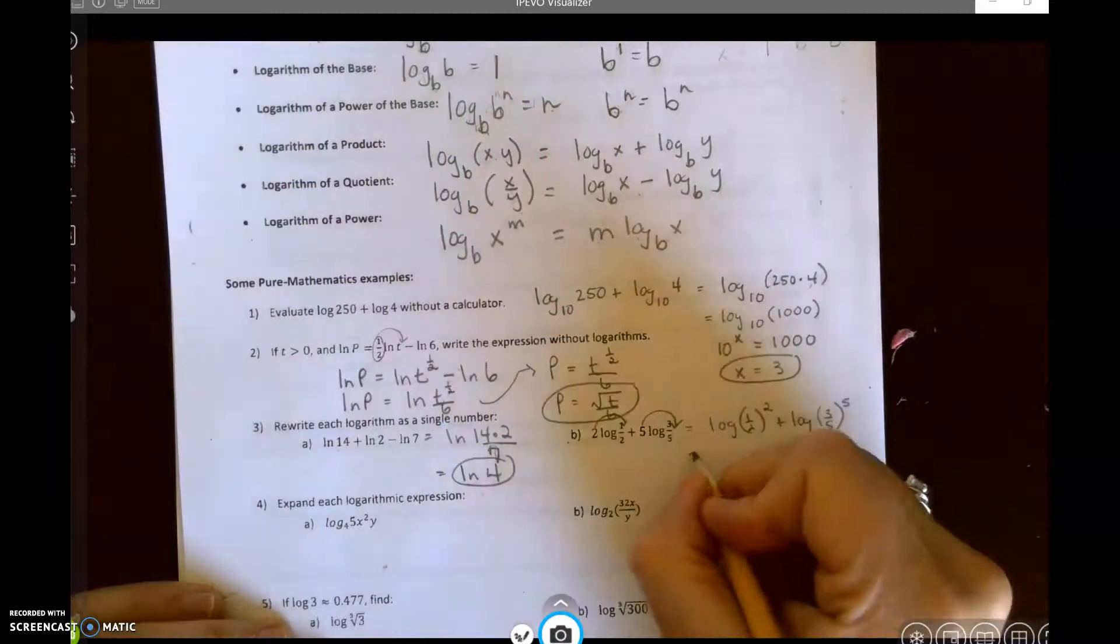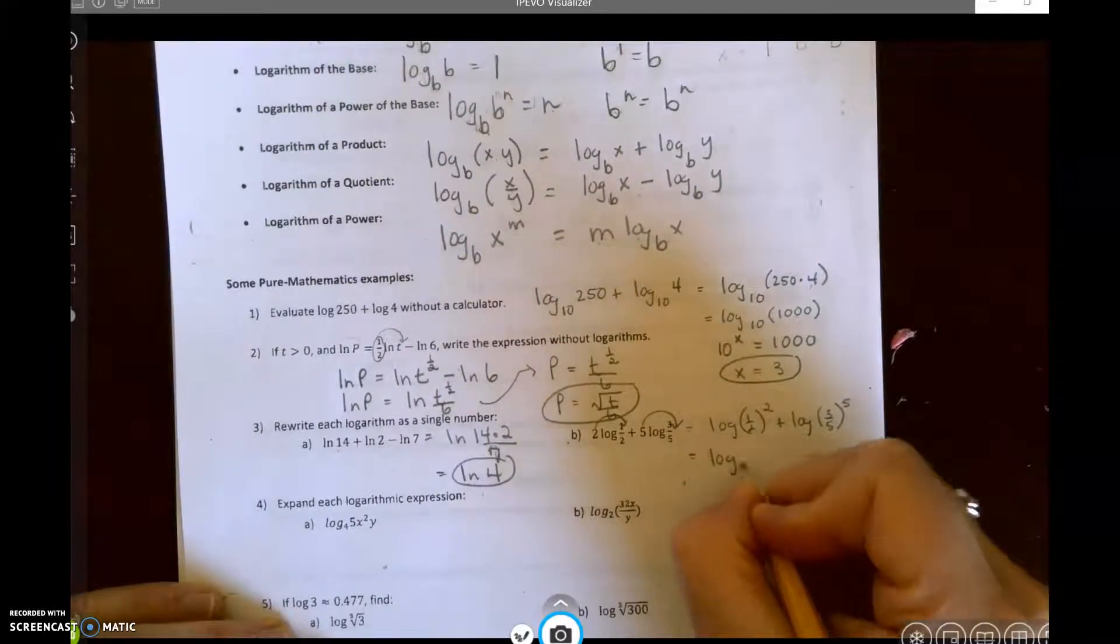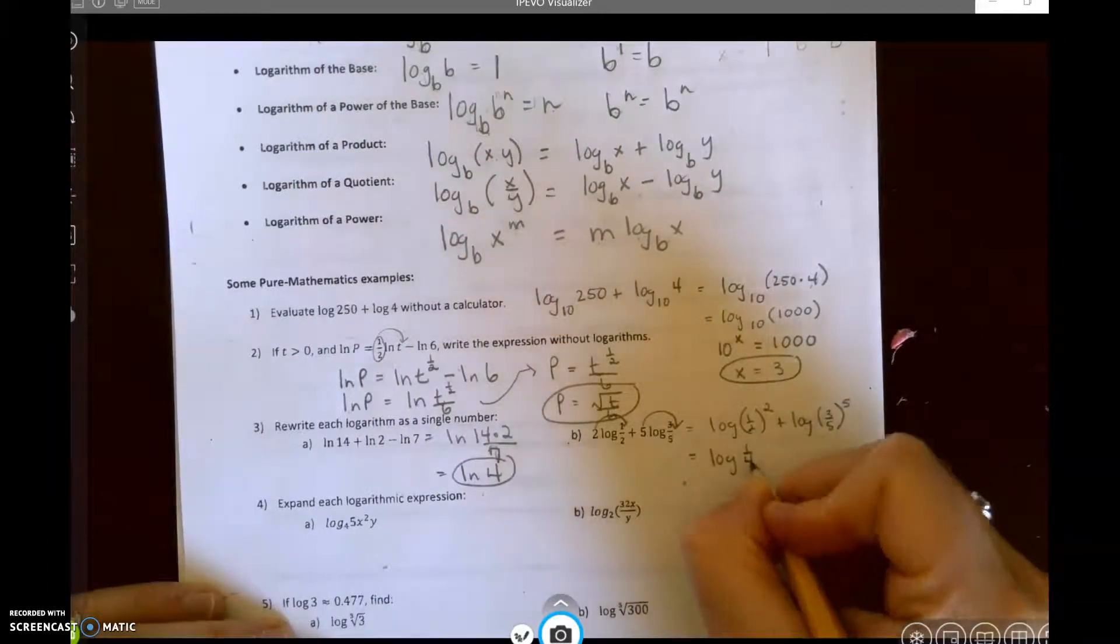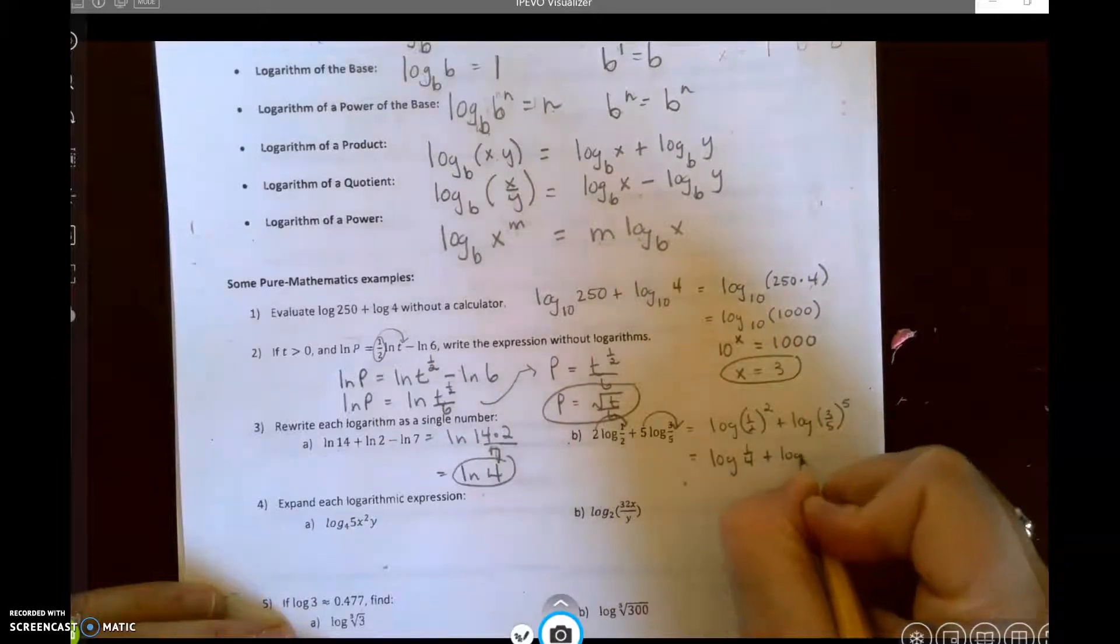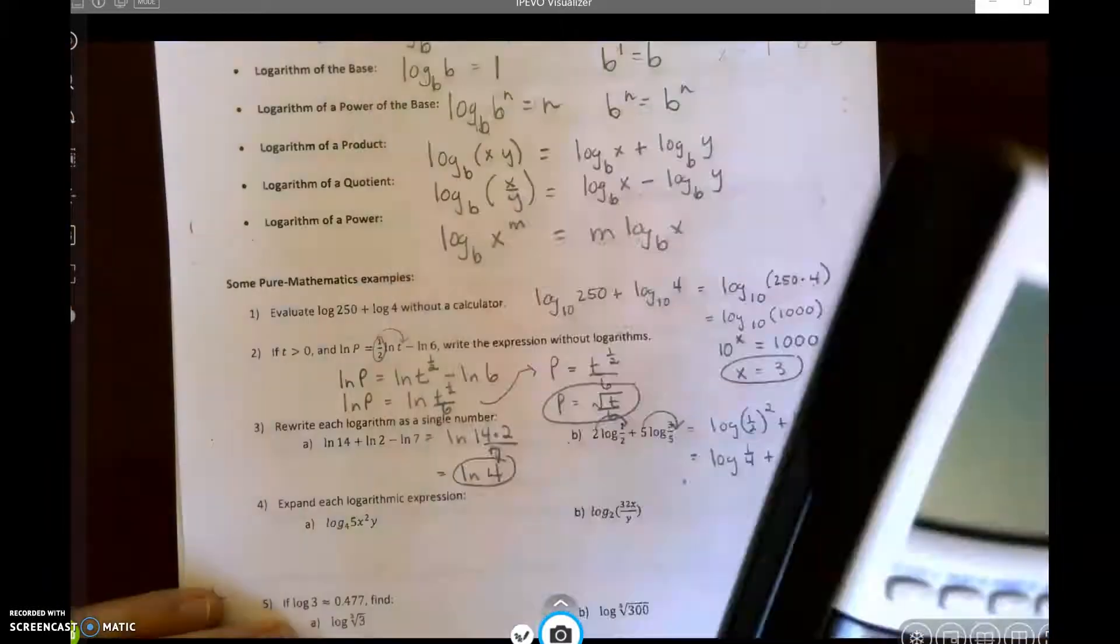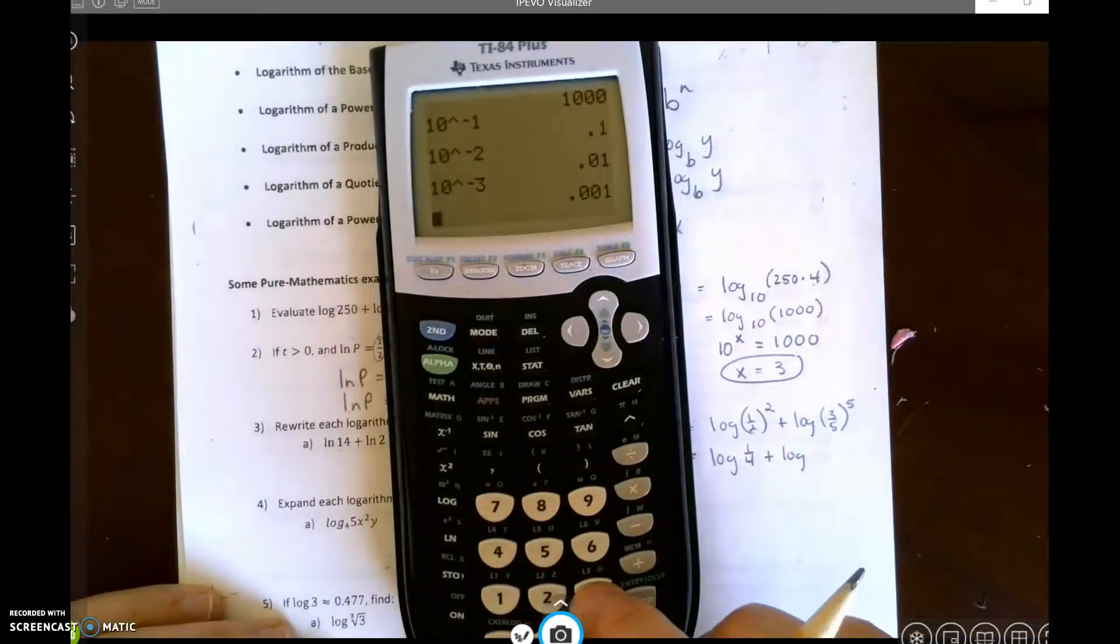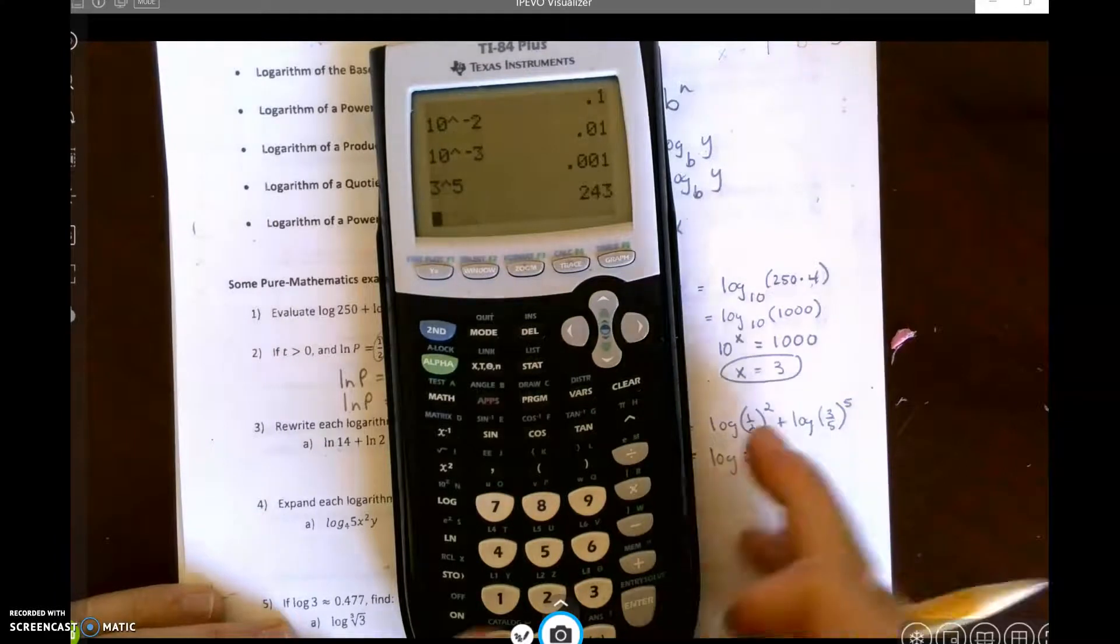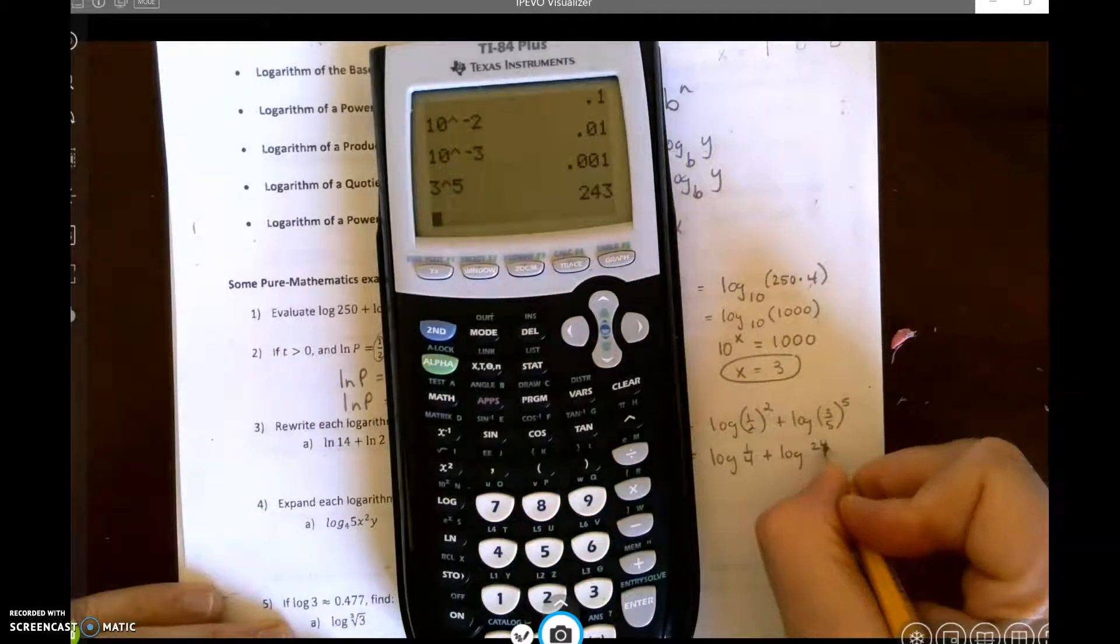So I have log of one-half squared plus log of three-fifths to the fifth power. Okay, so I have log of one-fourth plus log of, let's see, three to the fifth power. Maybe a calculator for that.